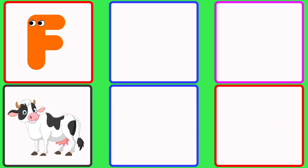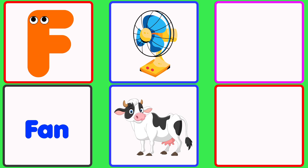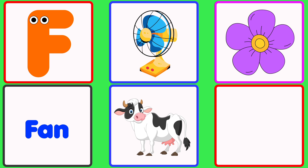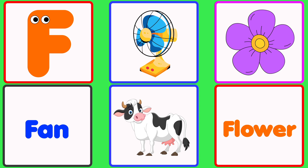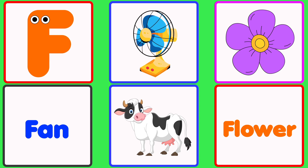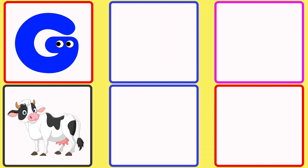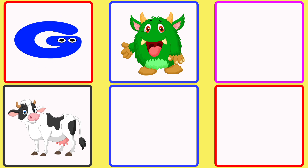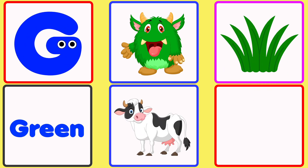F is for Fan. F-F-Fan. F is for Flower. F-F-Flower. G is for Green. G-G-Green. G is for Grass. G-G-Grass.